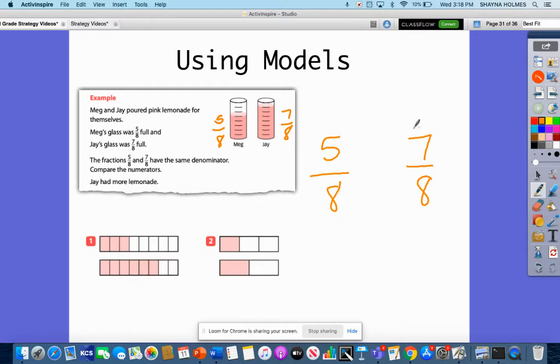So right here, I'm going to look for what's larger. So I know that 7 is larger than 5. So I'm going to use my symbols. I have my greater than and then less than. So 5/8, since 5 is smaller, so it would be just the little point, 5/8 is less than 7/8.